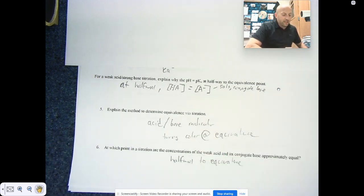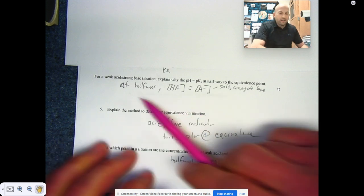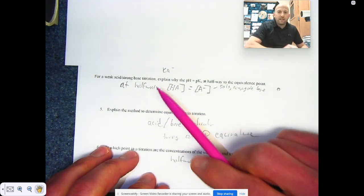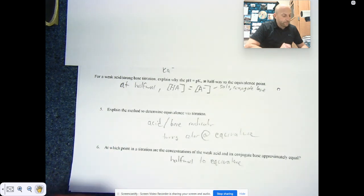Explain the method to determine equivalence via titration. Well, we have our indicators and that's going to turn color at the equivalence point, and then we can start to look at these graph and the halfway and all of those things. Let's look at the next page.